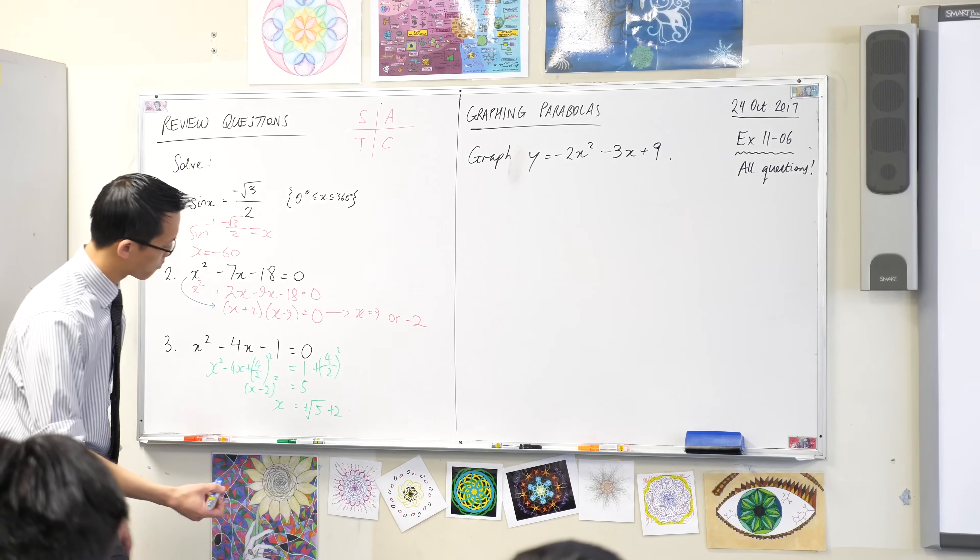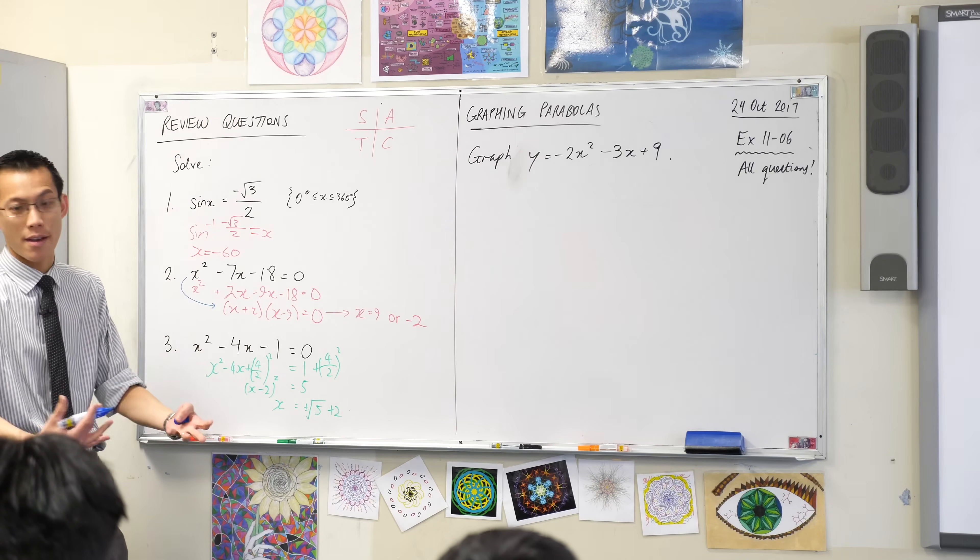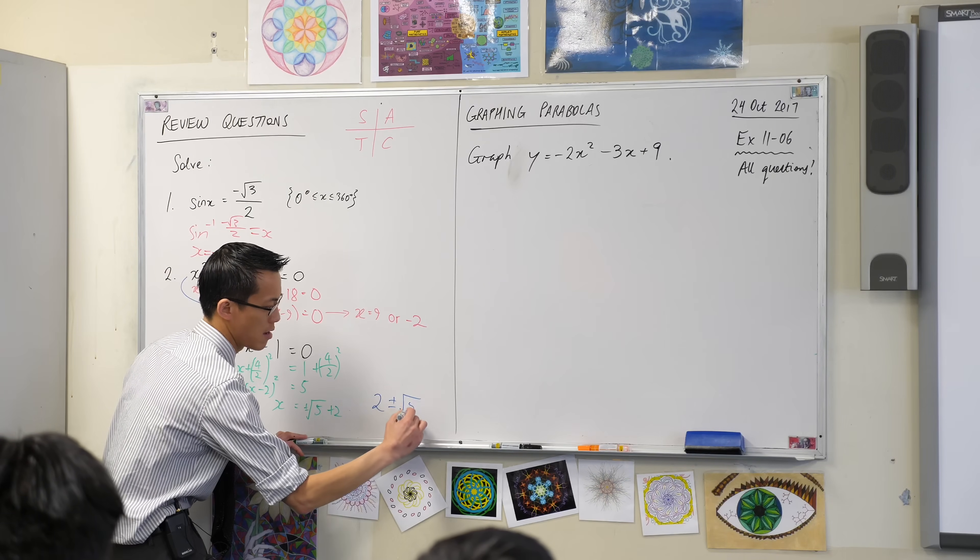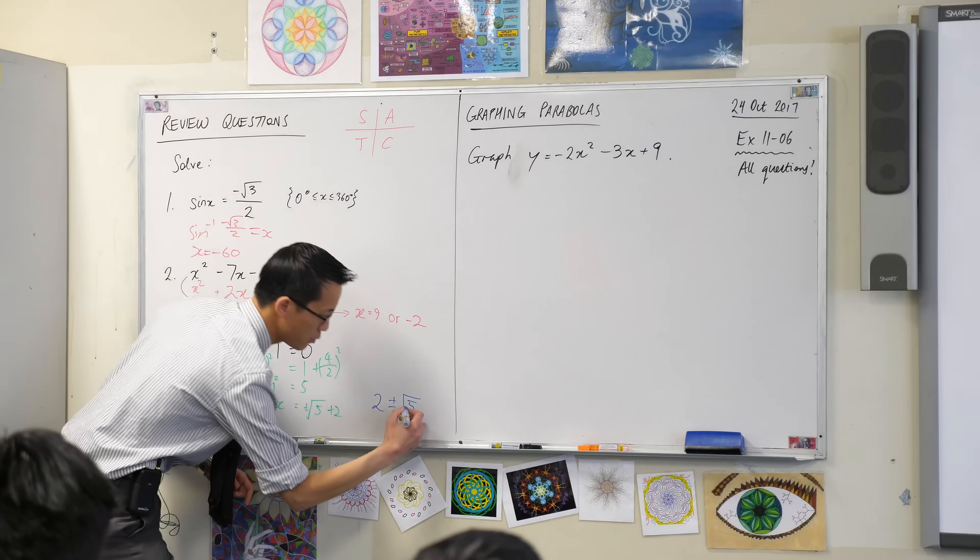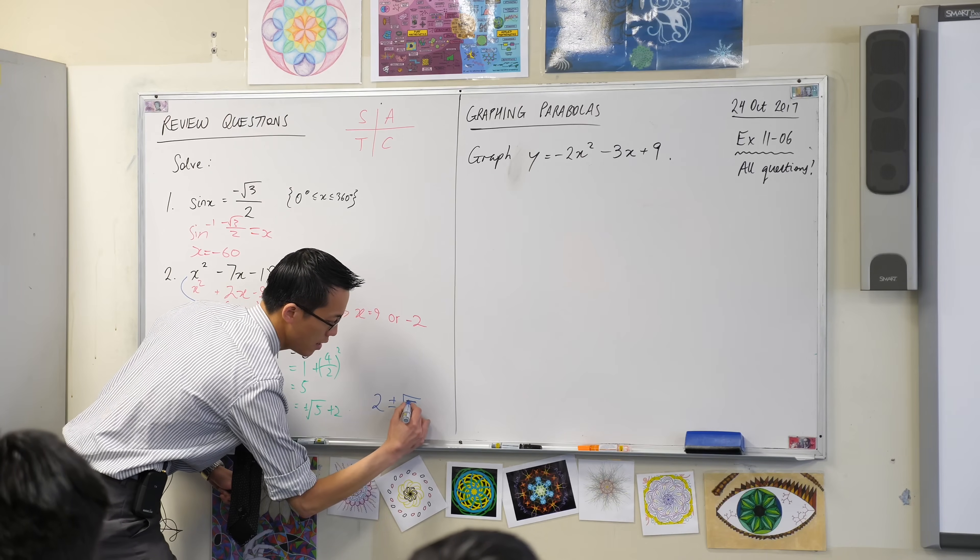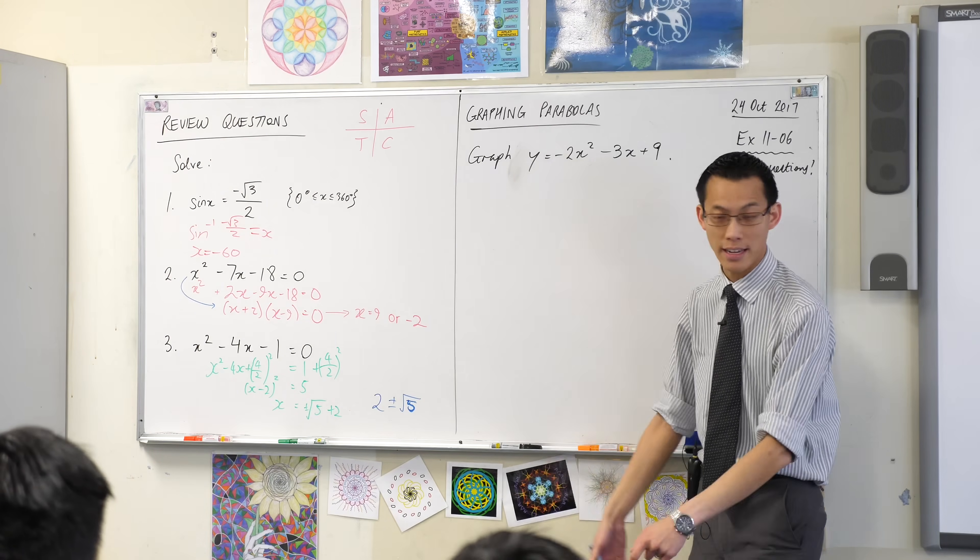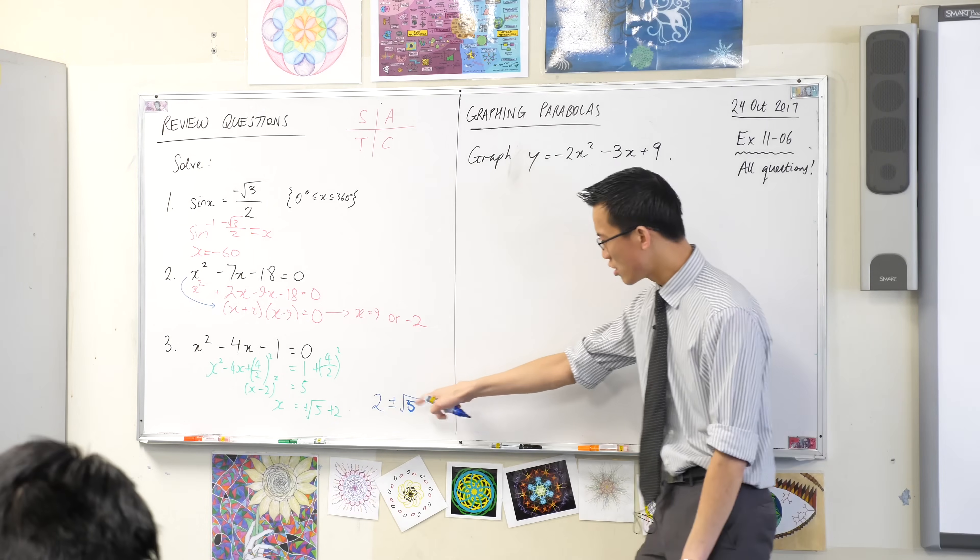Just a minor note, because you've got the plus minus there, it's customary to write the other number first. Like so. And this actually will become useful to us a bit later on. So I'm going to encourage you to write the other number, positive or negative, write that one first, and then do the plus minus afterwards.